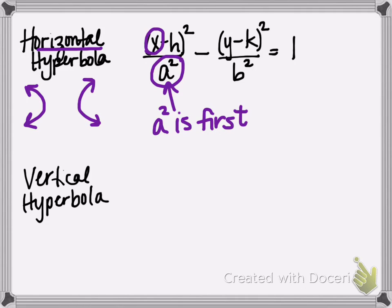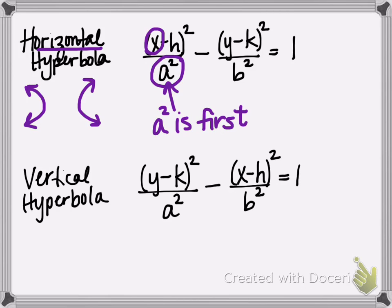Whereas, if our hyperbola is a vertical hyperbola, meaning that the branches open up and down, our equation then is going to have the variable Y first. So that would be Y minus K squared over A squared minus X minus H squared divided by B squared is equal to 1. So again, notice, A squared is first. A squared will always be first when hyperbolas are written in this form.